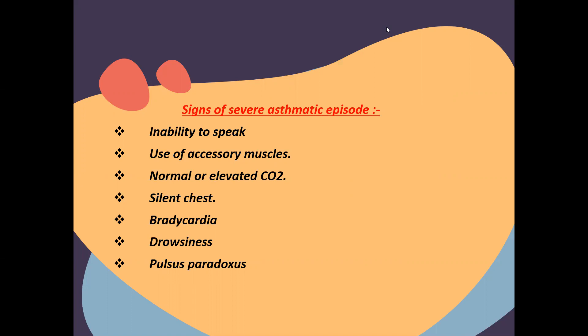On ABG, if we see normal or elevated CO2, it is significant. An asthmatic patient with a high respiratory rate would normally wash out CO2, so CO2 should be less than normal. If CO2 is normal or elevated, the patient is becoming very tired — the asthmatic attack is really severe. On chest auscultation, a silent chest means severe bronchoconstriction with poor air entry.